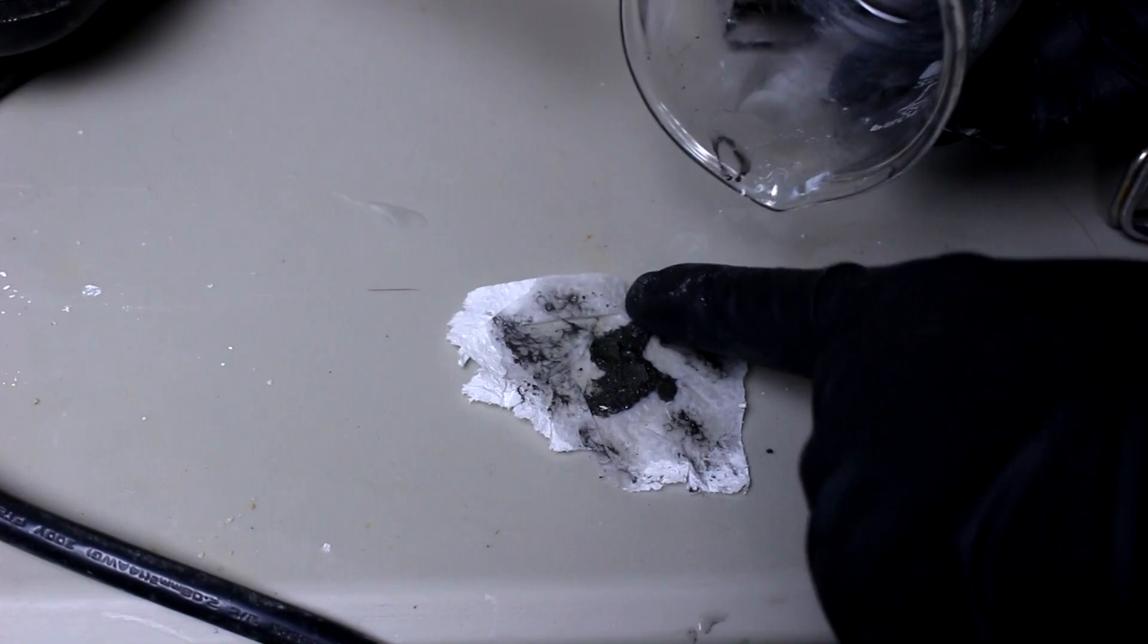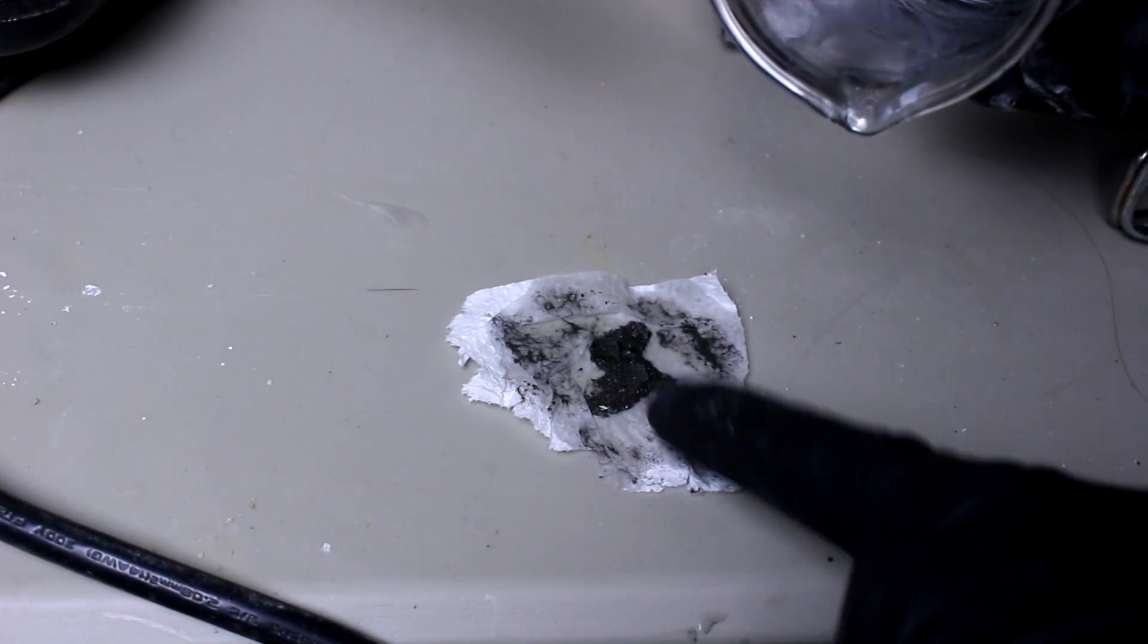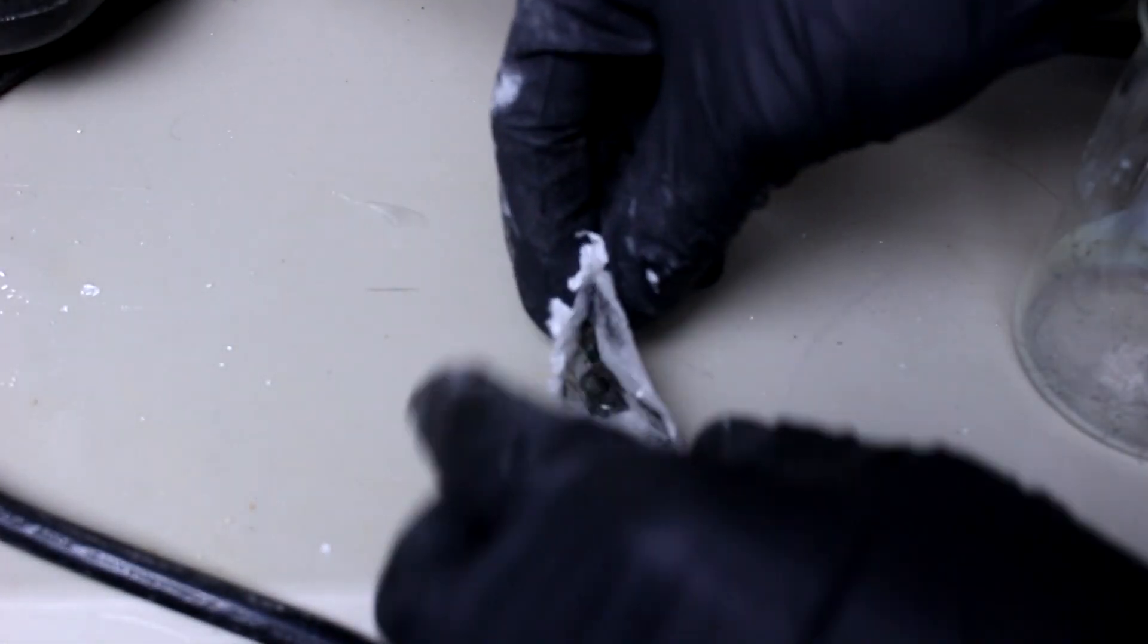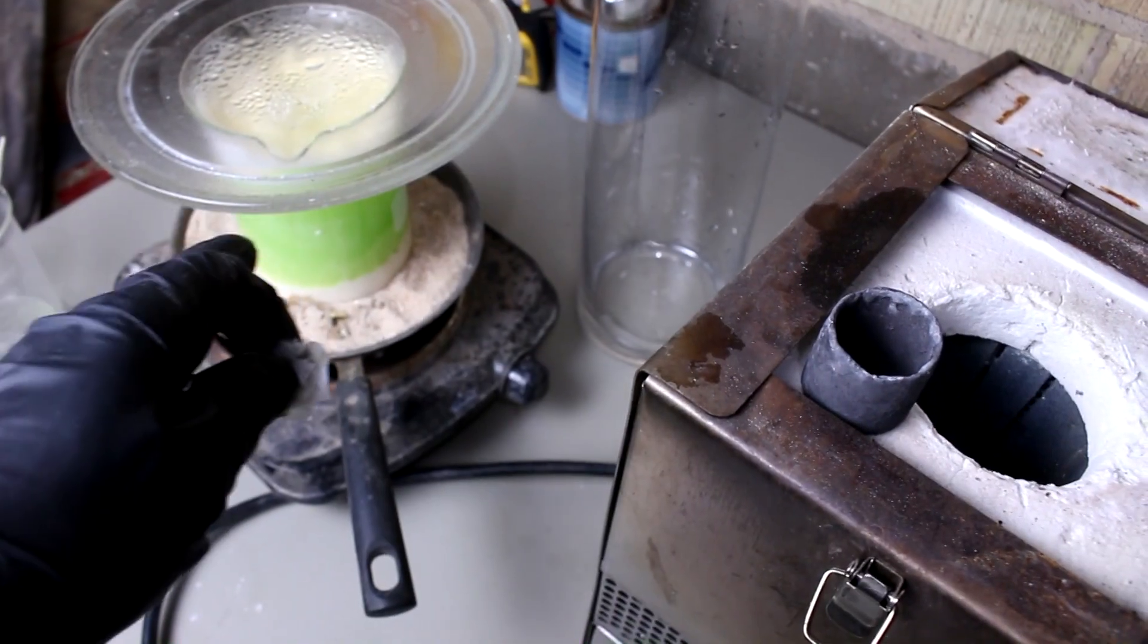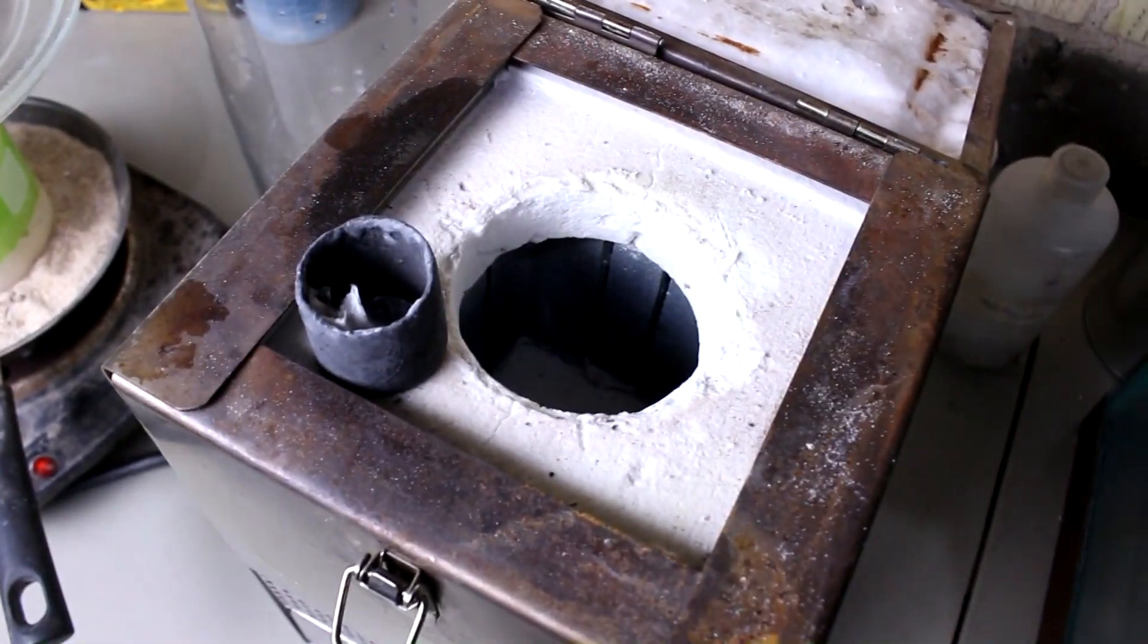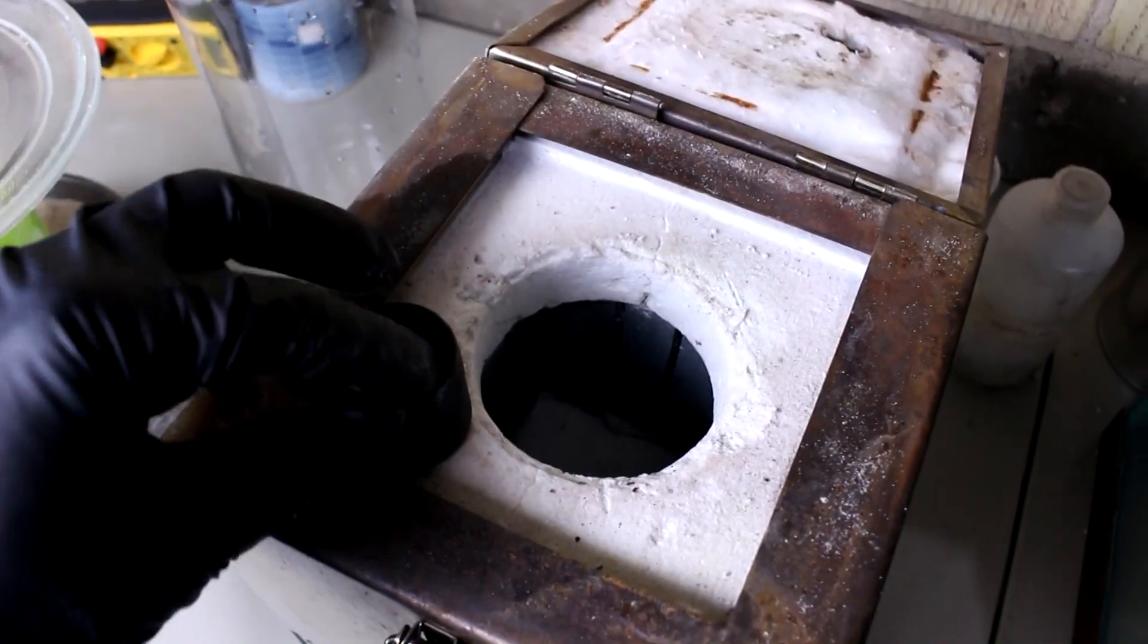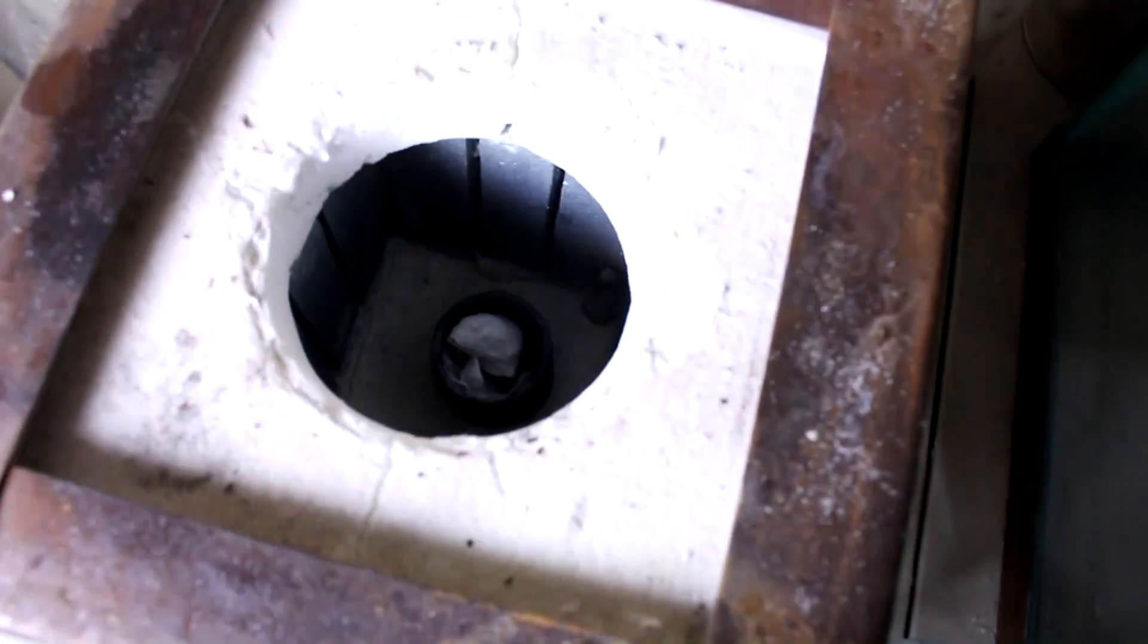So here's our black material which I believe to be mostly gold. Okay. Let's take this, fold it up in the paper. And while this is settling out, let's pack this into the furnace along with a chunk of borax to flux it.